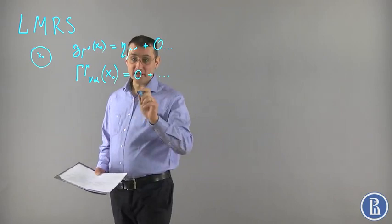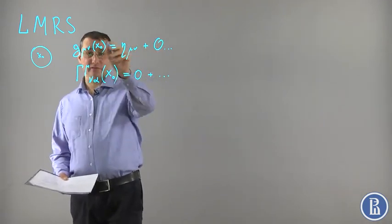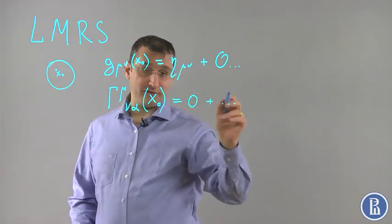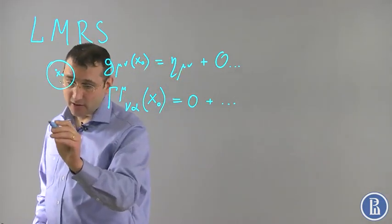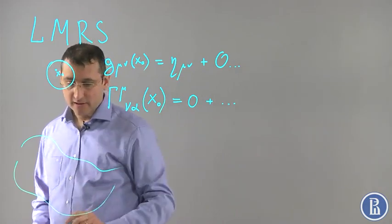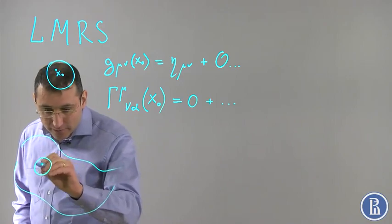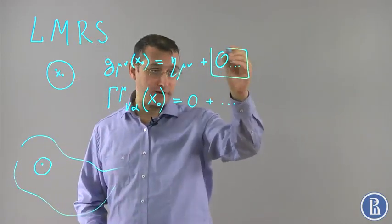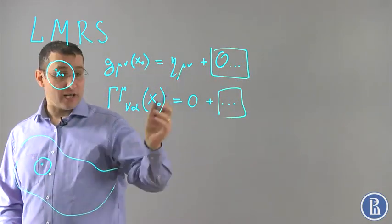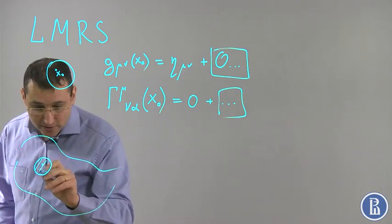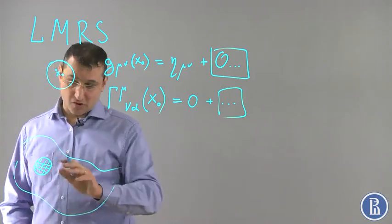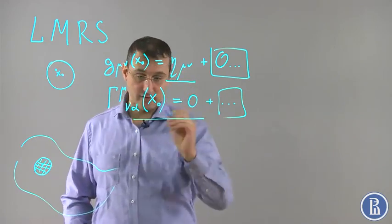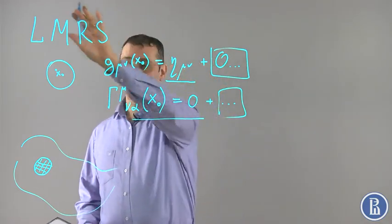This doesn't necessarily mean that the derivatives of g or Γ are also vanishing at this point. The idea of this reference system is very simple. Suppose we have any curved space. In a vicinity of any point, when the vicinity is very small, the space looks almost flat — almost means there are corrections. In that nearly flat region, we can choose a locally Minkowskian reference system where the metric is η_μν and Γ is zero.